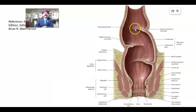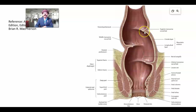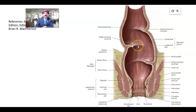We are seeing the rectal folds — transverse mucosal folds, also called transverse rectal folds. Each contains mucosa, submucosa, and muscle. We have the superior transverse rectal fold, the middle transverse rectal fold, and the inferior transverse rectal fold, which is more prominent. These folds act as a shelf-like support for feces collection. Once feces are in the ampullary area, there is stimulation for defecation.